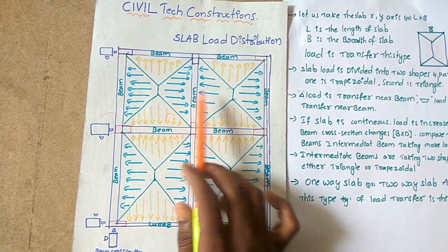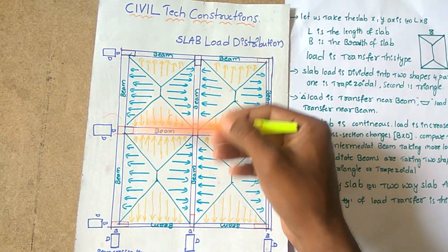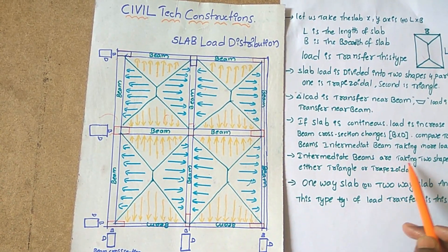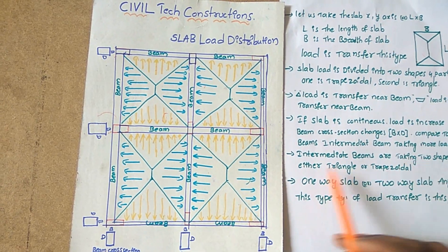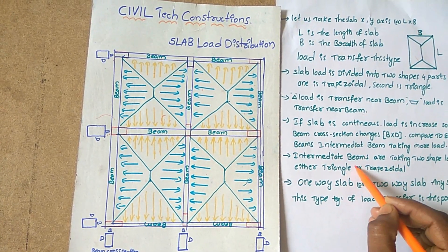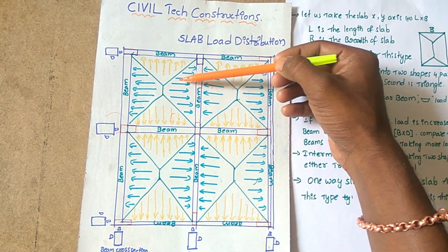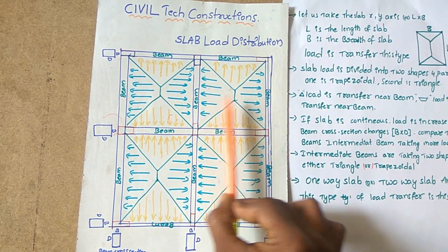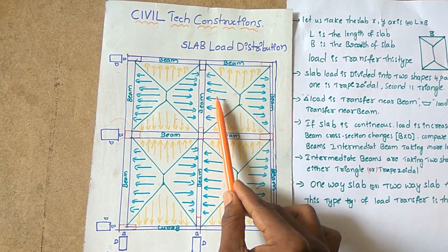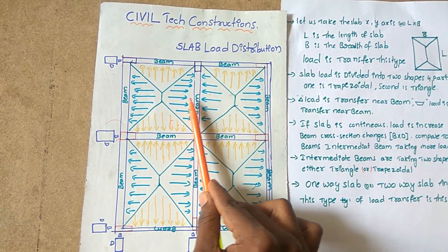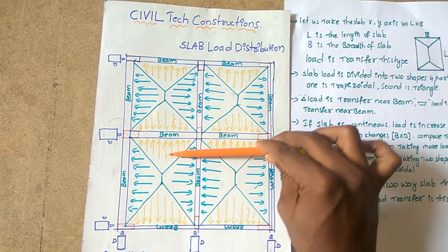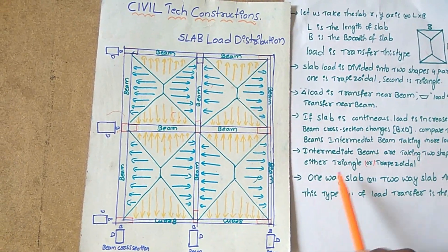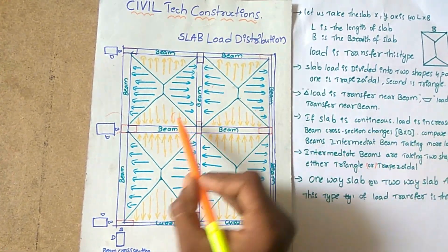This slab has a y axis and an x axis. The intermediate beams are taking two shapes of loads — either triangle or trapezoidal. This is the trapezoidal load, this is the trapezoidal load. This trapezoidal load is transferred to this beam, and this triangle load is transferred to this beam.